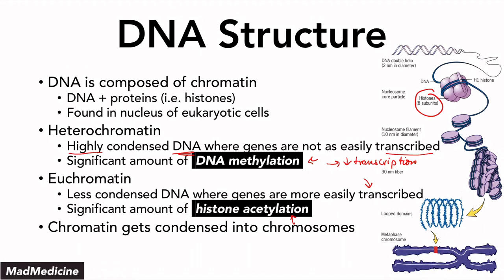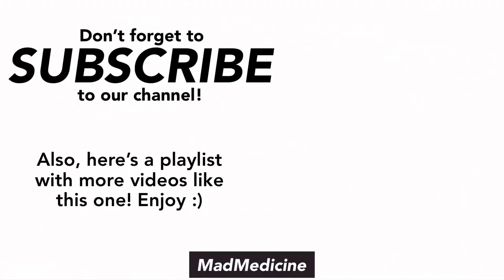Chromatin gets condensed even further into chromosomes — those classic chromosome structures you see during metaphase. This occurs during the cell cycle when the cell is getting ready to divide and split into two cells. And with that, those are the basics of our DNA overview lecture. We're going to dive deeper into this in upcoming videos, so stay tuned. Thank you so much for watching, and we'll see you back here real soon.